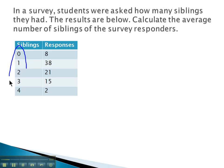Well, we don't want to simply just average the siblings, 0 plus 1 plus 2 plus 3 plus 4 and divide by 5, because you see that a lot more people had 1 or 2 siblings than all the rest of the data values.